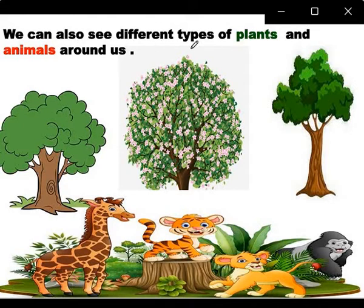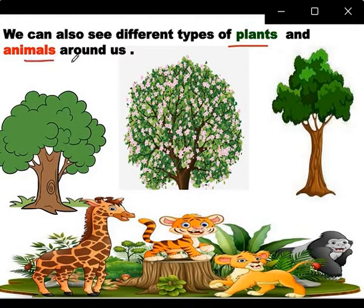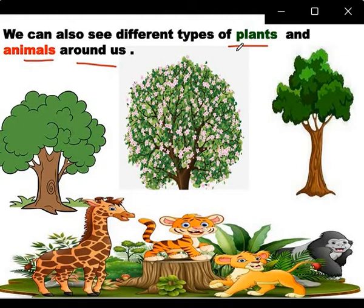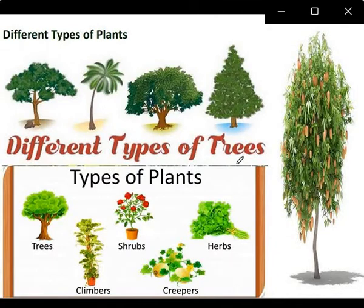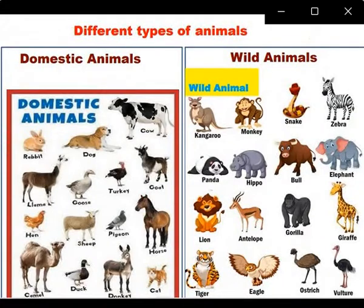We can see different types of plants and animals around us. We don't see one kind of plant — we see small plants, big plants, different shapes of plants. The animals are different too. These are the different types of trees, and these are the different types of animals.